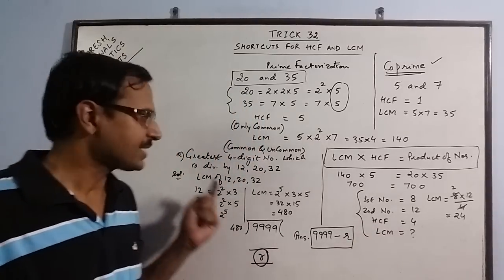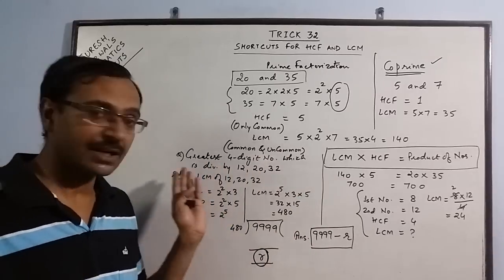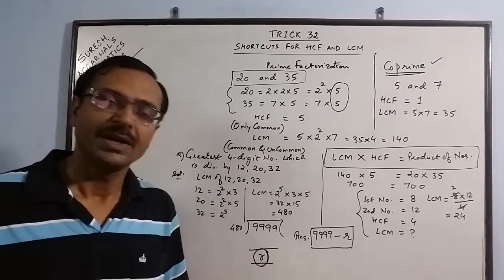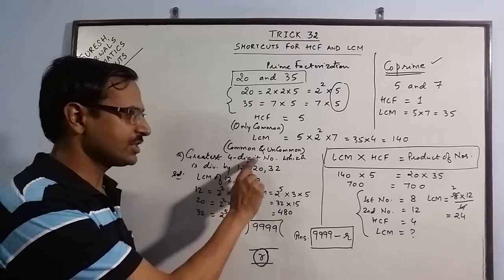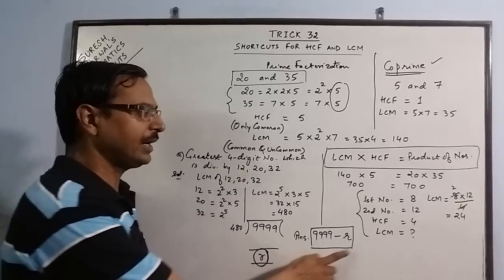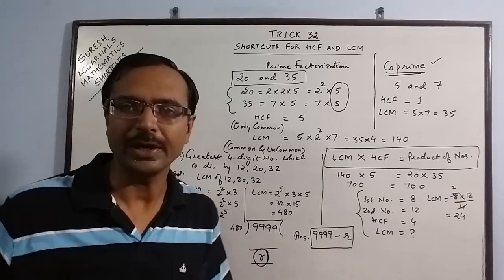And your answer will be the greatest 4 digit number minus the remainder. So for solving these kind of problems finding the greatest 4 digit 5 digit number which is exactly divisible by some given numbers, take the LCM of given numbers, divide the greatest 4 digit number by that, find the remainder and subtract the greatest number and the remainder to get the answer.